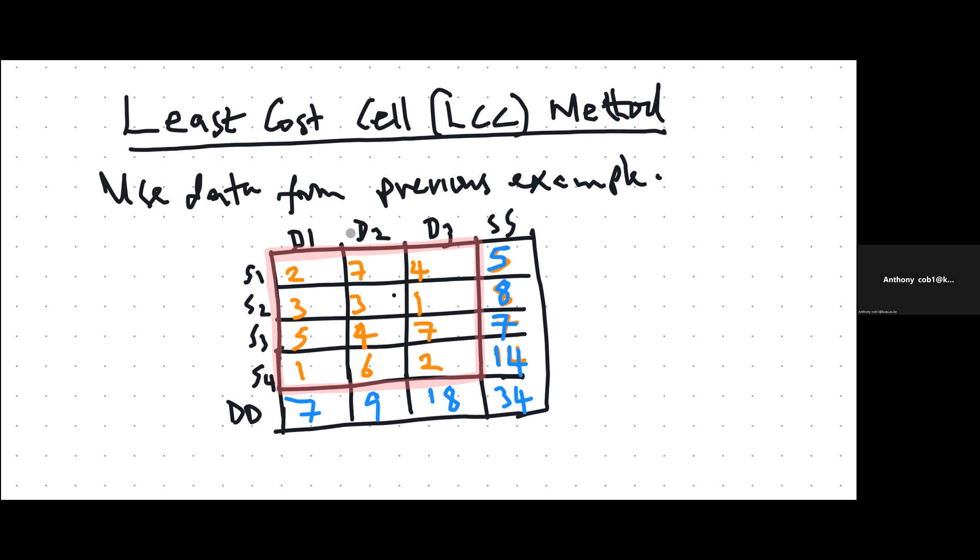We have two cells, S2-D3 and S4-D1, and because there are two cells, we just pick one at random. What do we allocate here? You either allocate 8 or 18, the smaller of the two. So here you put 8. Then you take away 8 here to get 0, and take away 8 here to remain with 10. Then you delete the row which has been satisfied.